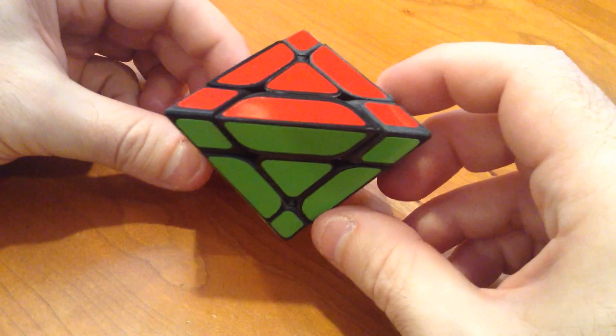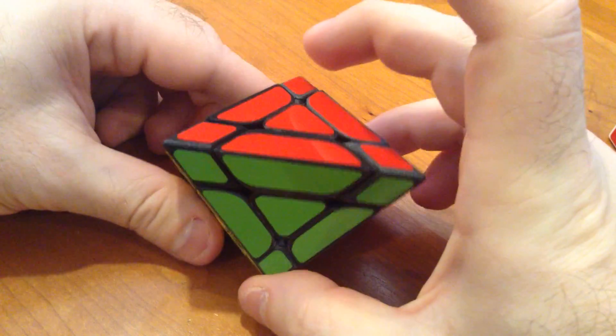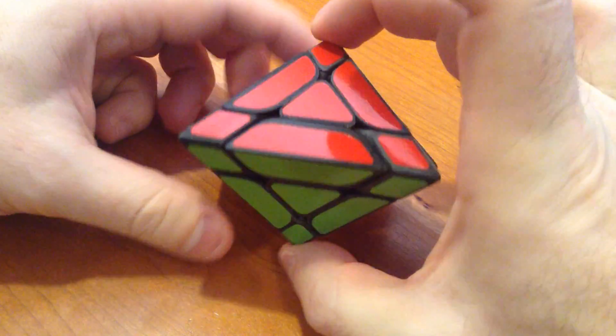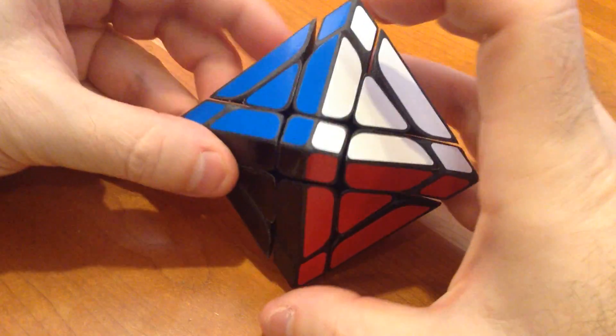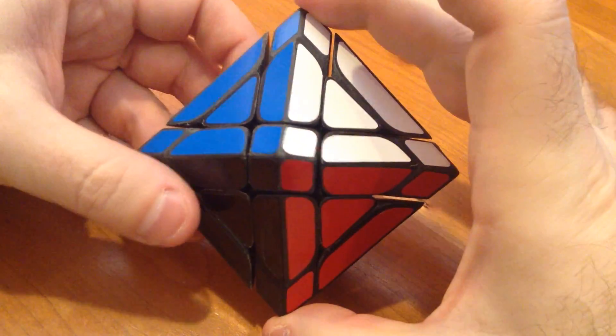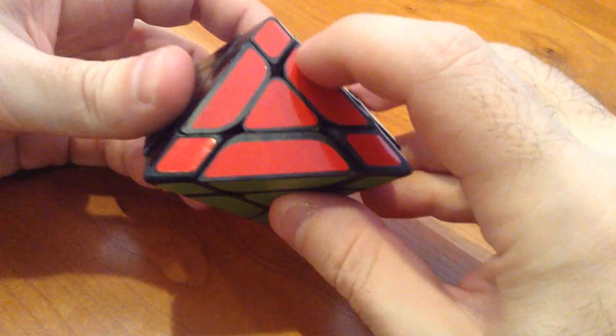What this one is, is a tetrahedron and it is actually squished on this axis here. So you can see that the height there versus the more squared off height here. As a result of that, as you turn it, it does shape-shift.